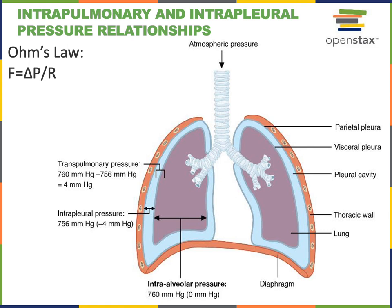If the intra-alveolar pressure is above atmospheric pressure, air will flow out of the lungs. Although atmospheric pressure equals approximately 760 mmHg at sea level, we refer to respiratory pressures relative to atmospheric pressure. So intra-alveolar pressure is called 0 mmHg when no air is flowing. A positive intra-alveolar pressure causes air to flow out of the lungs, and a negative intra-alveolar pressure causes air to flow in.